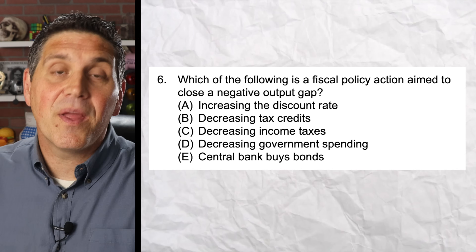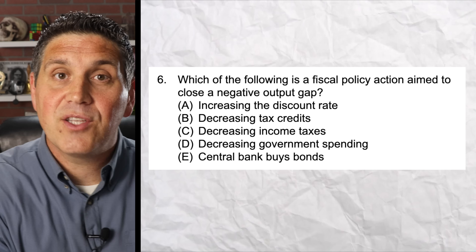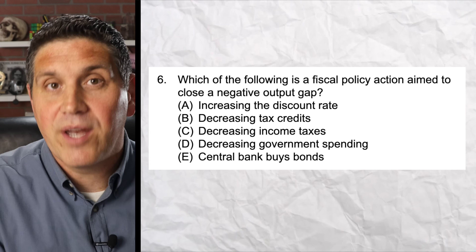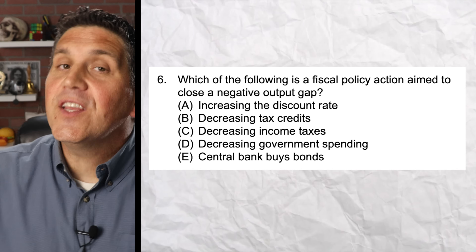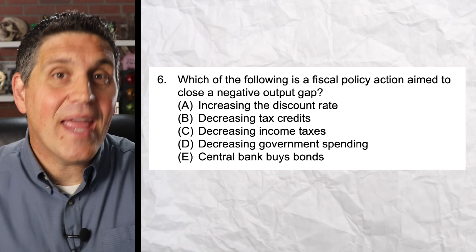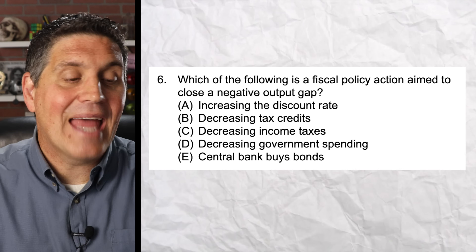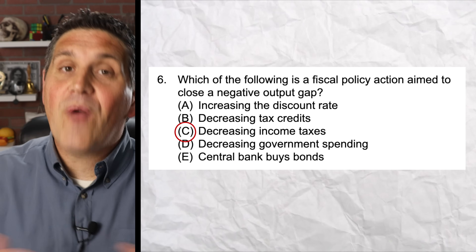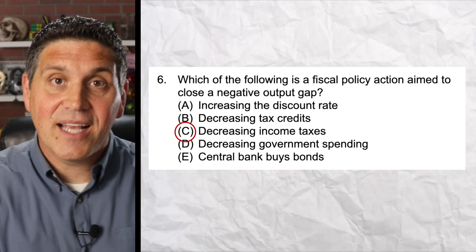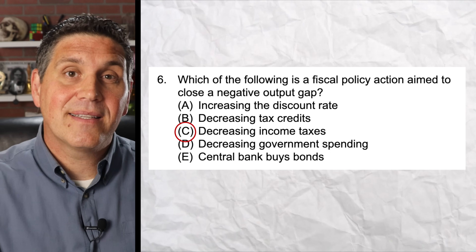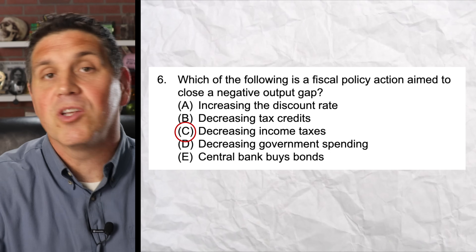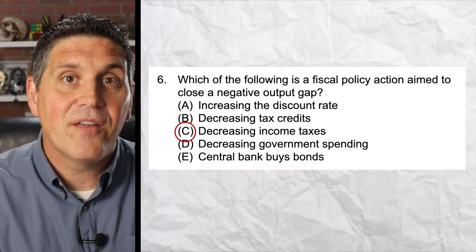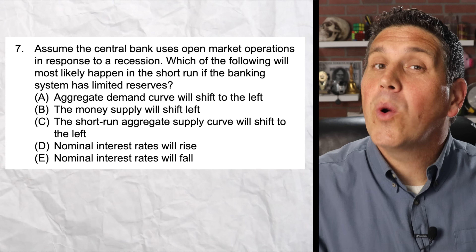You're also going to see something like question six, where you have to differentiate between fiscal policy and monetary policy. For this one they're talking about fiscal policy, so answers A and E are out because they refer to monetary policy. The right answer is C: decreasing taxes gives consumers more disposable income, they'll spend more, and that closes a negative output gap or recessionary gap.